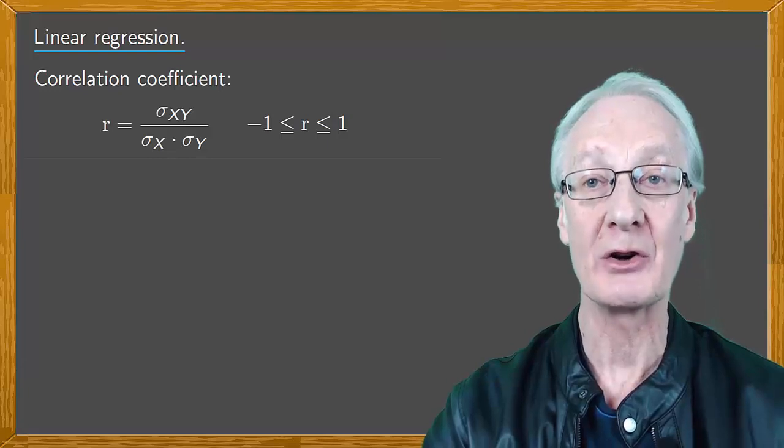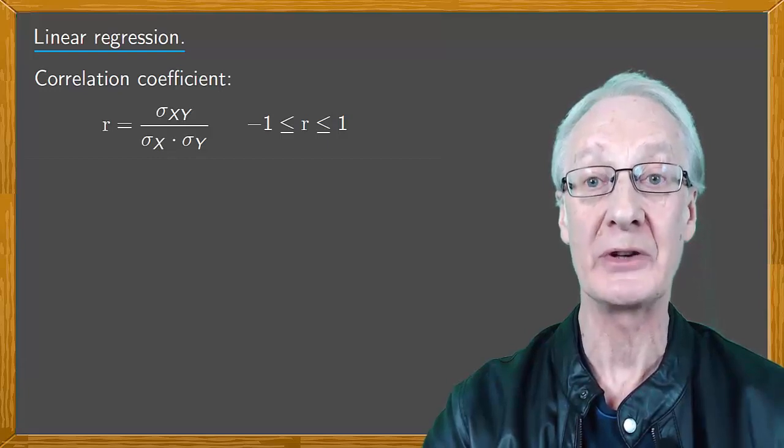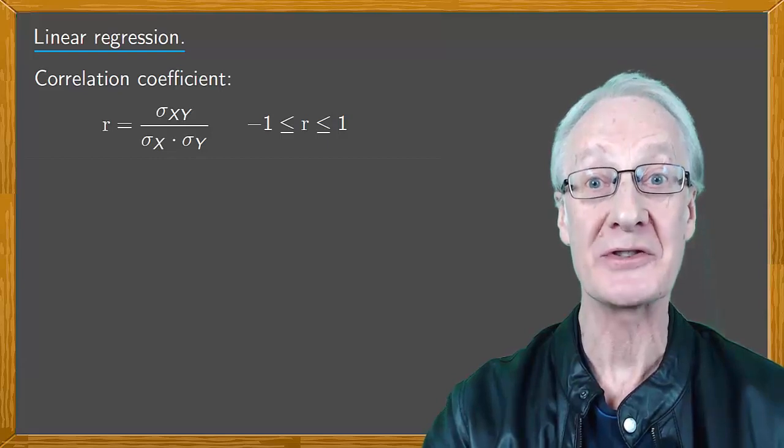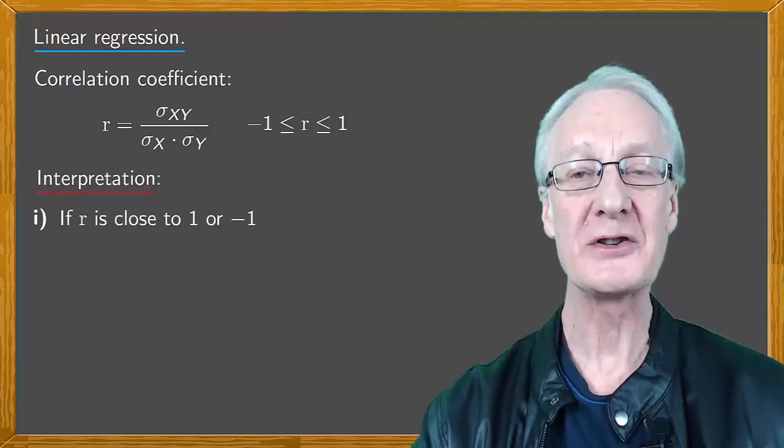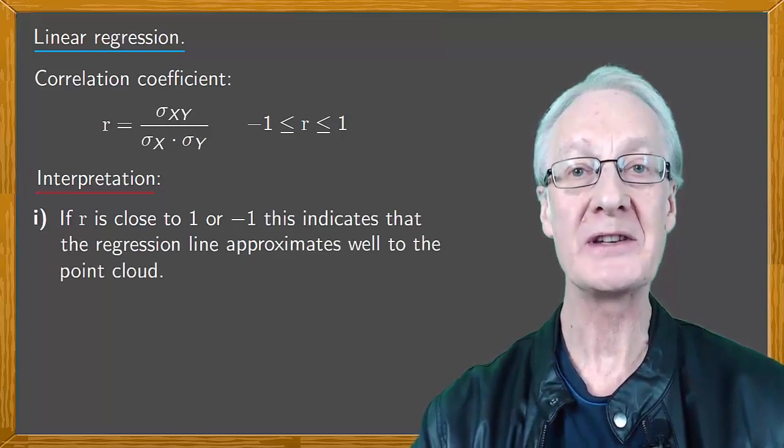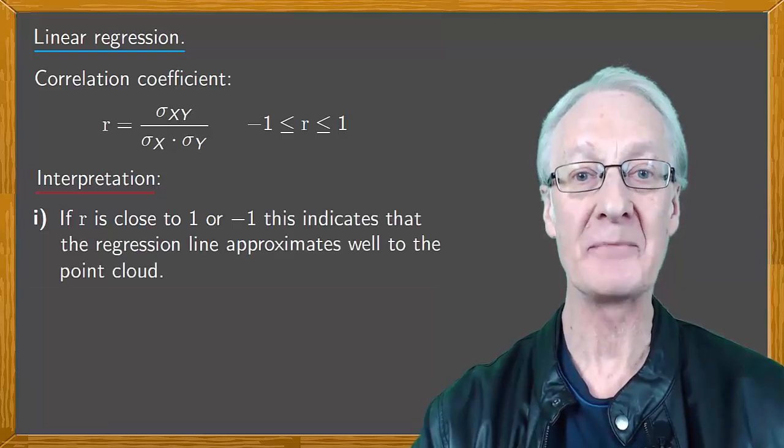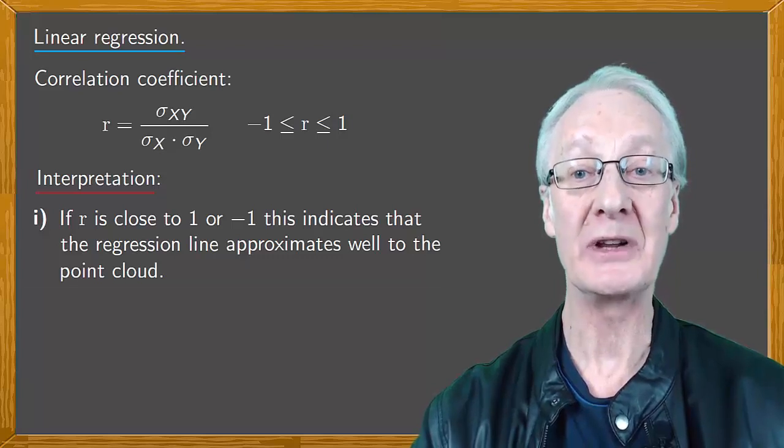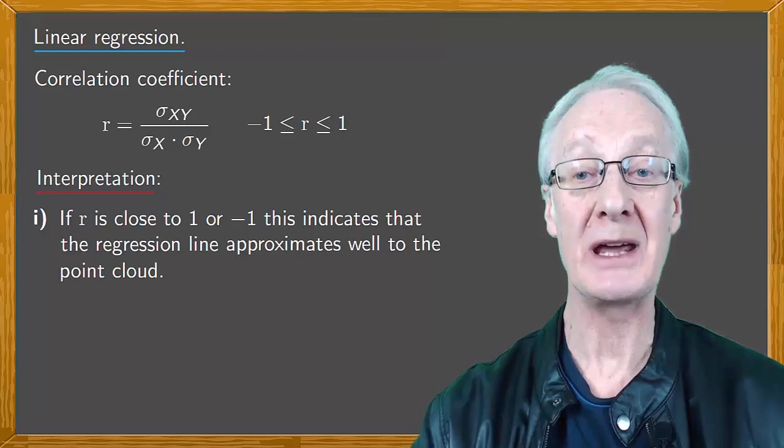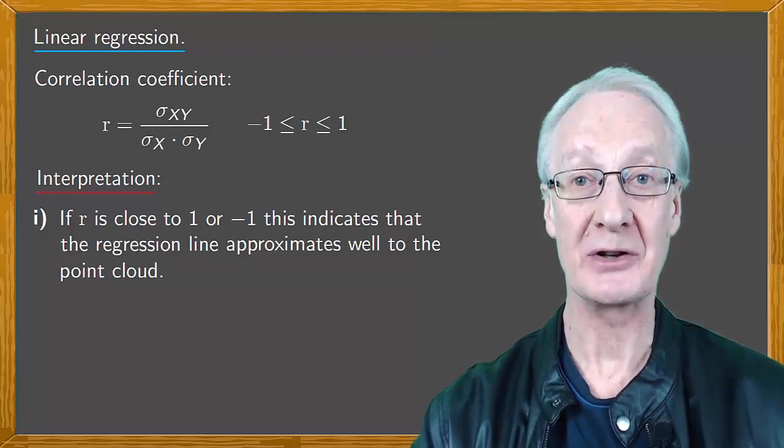An advantage of the correlation coefficient over covariance is that it has a value between minus one and one. The covariance, by contrast, can be large, positive or negative, with the ambiguity that this introduces. If the correlation coefficient is close to one or minus one, this indicates that the regression line approximates well to the point cloud. And in this case, the predictions we make using the regression line will be good.